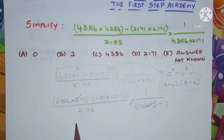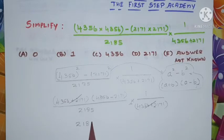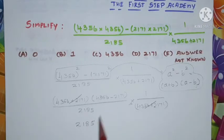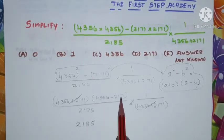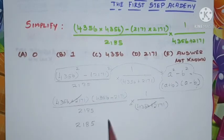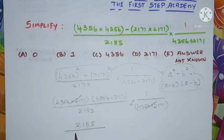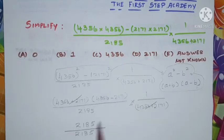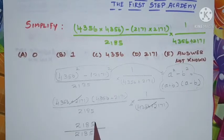6 minus 1 is 5, 15 minus 7 is 8, 2 minus 1 is 1, 4 minus 2 is 2, so 2185 divided by 2185 remains there. Now look at this one: 2185 divided by 2185.